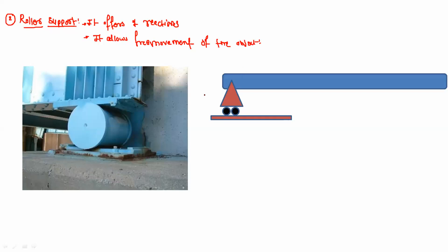Looking at the schematic representation: this is the roller support, with rollers on a fixed surface (the ground), and this is the object — a beam — supported by the roller. The beam AB is supported at point A by the roller support. The reaction RA offered by the roller support is perpendicular to the surface on which the roller is mounted, passing through point A.